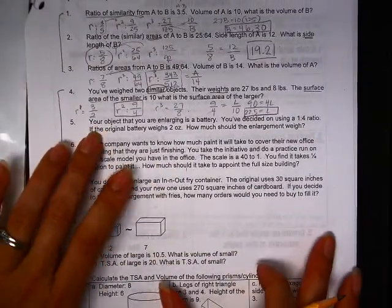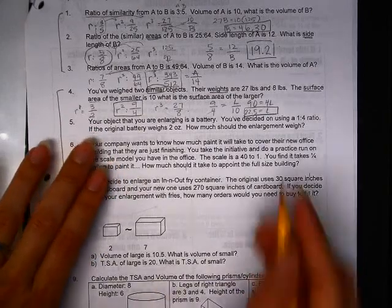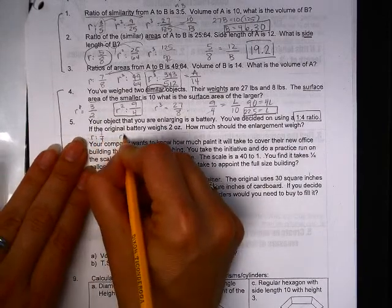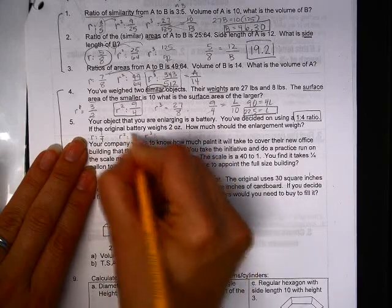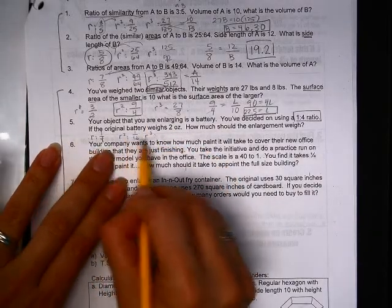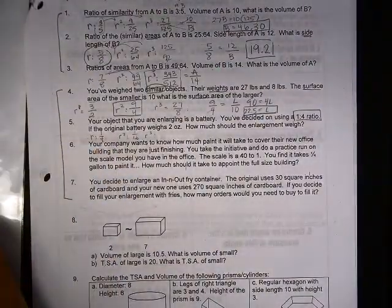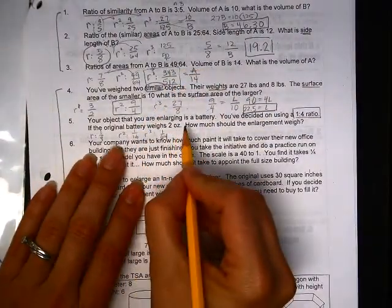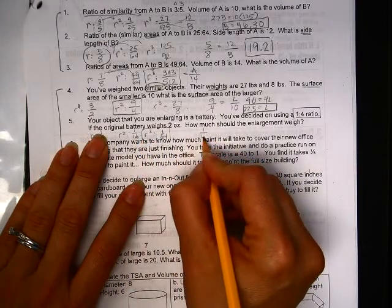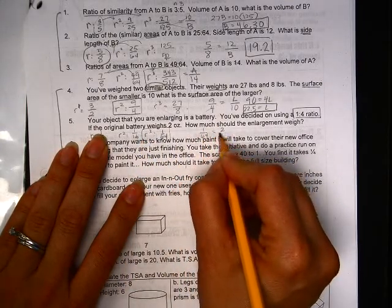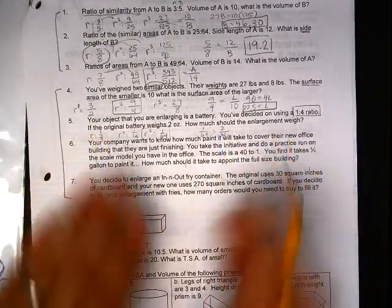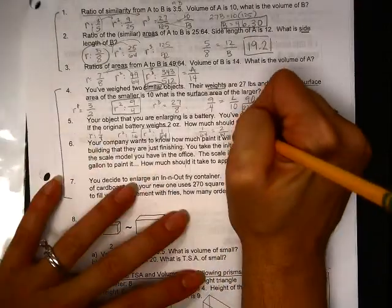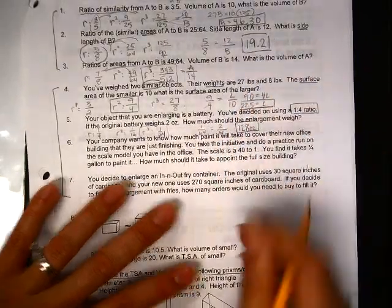So let's look at 5. Your object you are enlarging is a battery. You've decided to use a 1 to 4 ratio. If it says that and it doesn't say anything else, that means R. And we need to figure out what R squared and R cubed is, which is 1 is to 16. Now, I'm not squaring that. I'm going back to here and cubing the 4, which is 64. And I am talking about weight, so I would say 1 is to 64, as my original 2 ounces is to my new weight. So I do my little cross-multiply, and then I'm actually done. So I get 128.